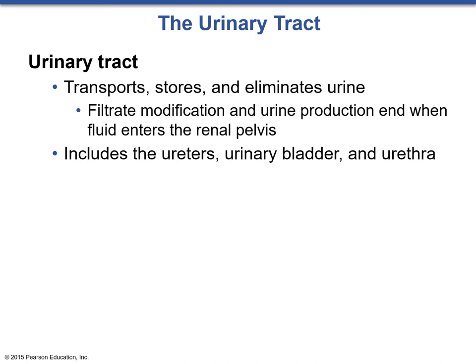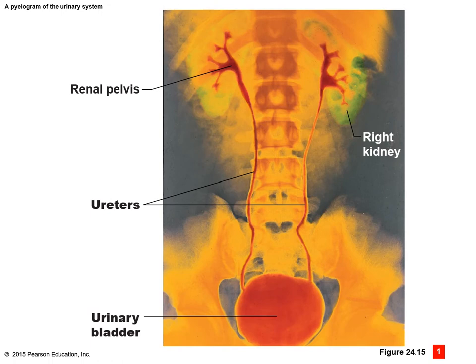Now we can talk about urine flow. Urine is created at the nephron and flows down from the nephron into the collecting duct, which heads into the minor calyx, into the major calyx, to the renal pelvis, and then the ureter. Once it enters the ureter, this begins the urinary tract. The goal of the urinary tract is to transport, store, and eliminate urine — filtrate modification and urine production are complete when urine enters the renal pelvis. The urinary tract includes the ureters, urinary bladder, and urethra.